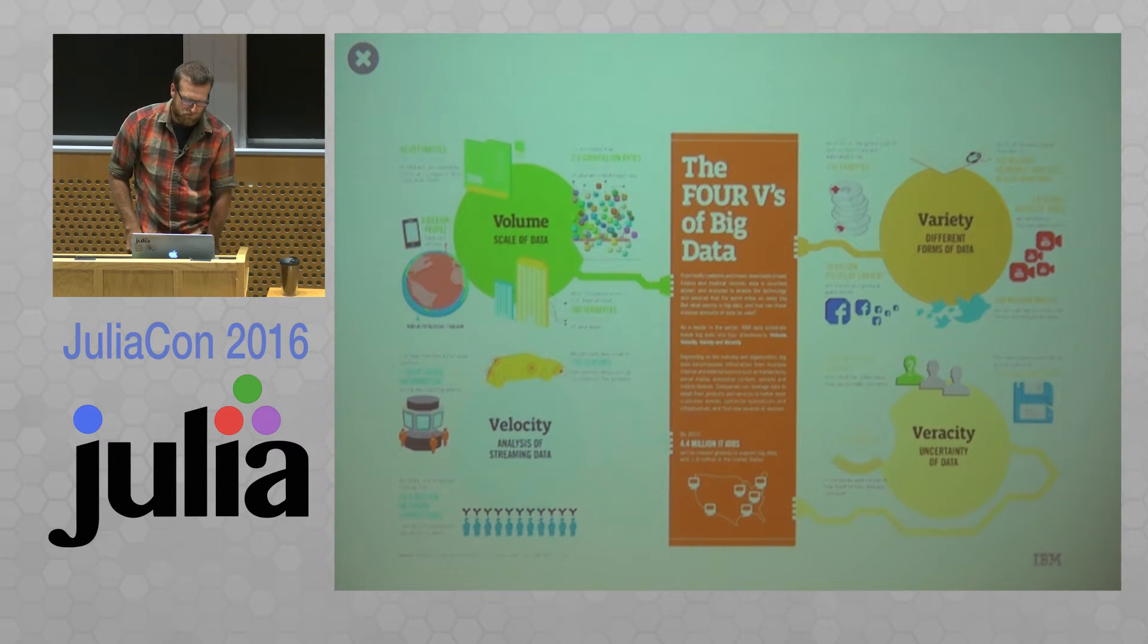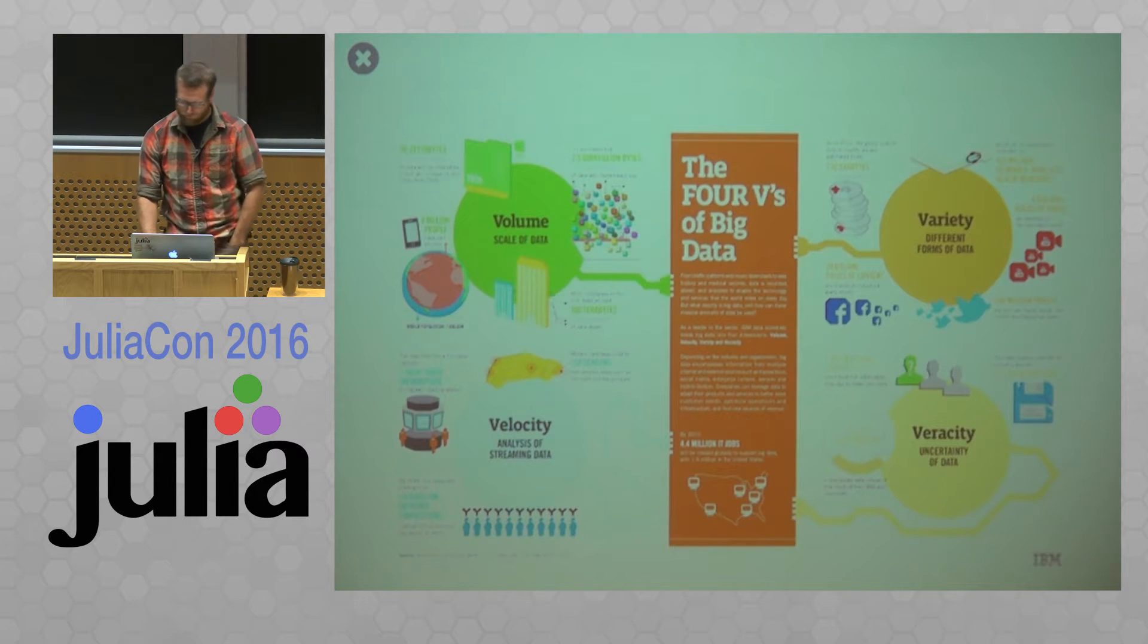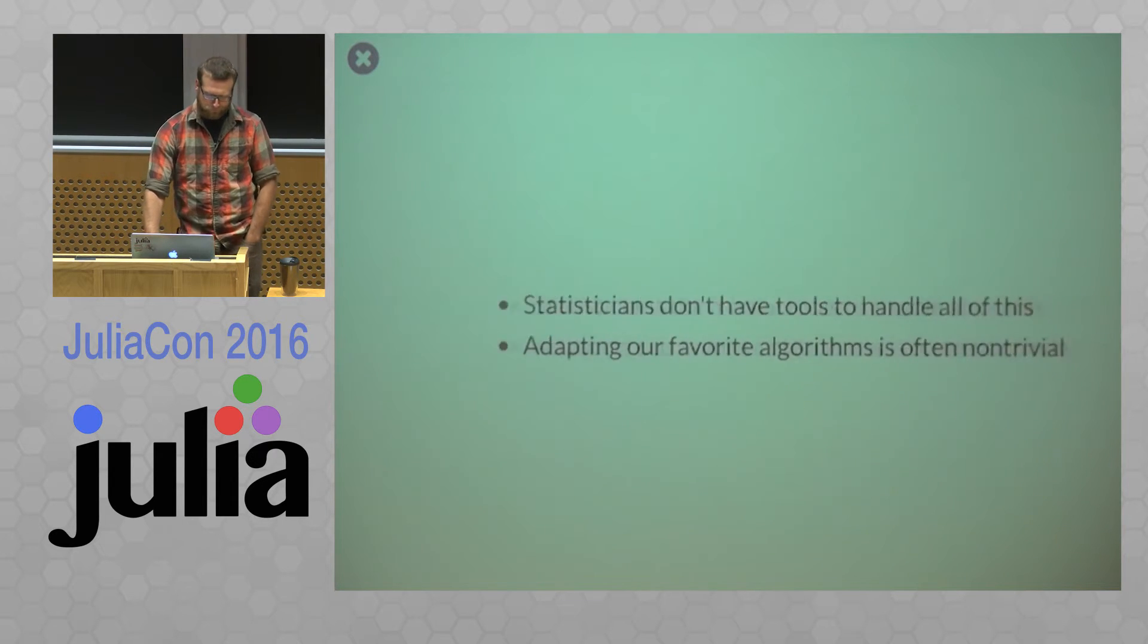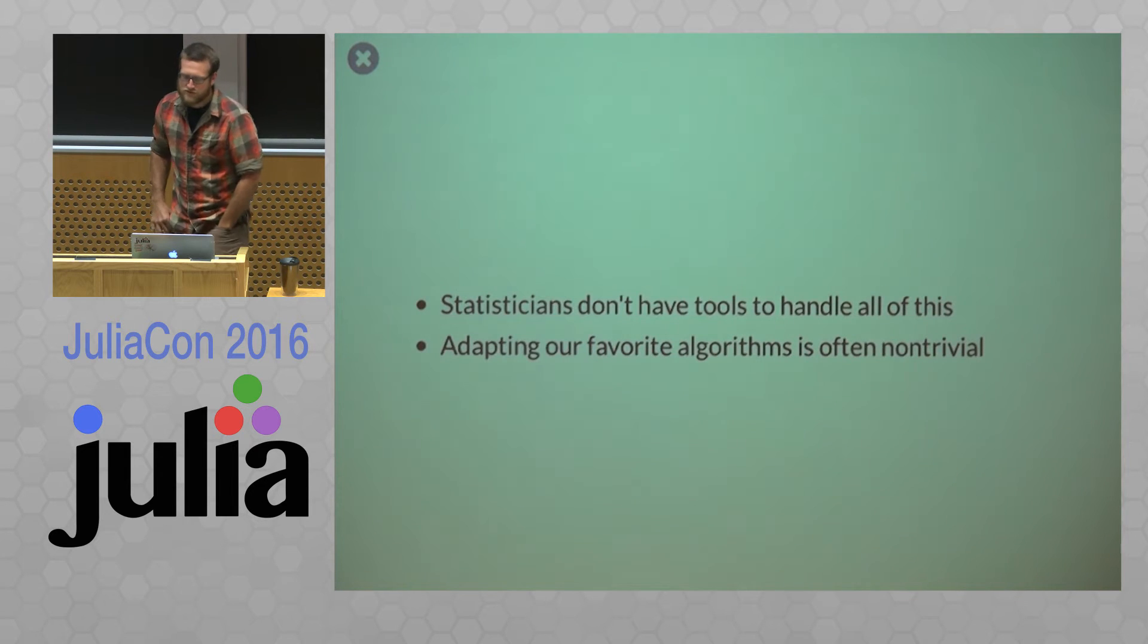But when it comes to volume or velocity you ask someone to do logistic regression on a terabyte of data most statisticians are gonna go blank and not be completely sure what to do. So statisticians don't have the tools to handle all this and adapting our favorite algorithms are often non-trivial.